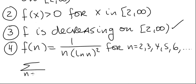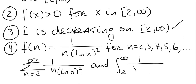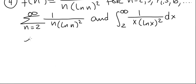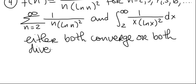We can now conclude the following: the series from 2 to infinity of 1 divided by n times ln of n squared, and the improper integral from 2 to infinity of 1 divided by x times ln of x squared, either both converge or both diverge. So we're going to evaluate the integral first to see if it converges or diverges, and then we'll make the conclusion about the series.